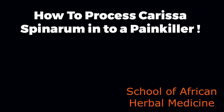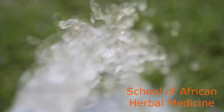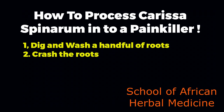How do you process it into a painkiller? Here is a step-by-step guide on how to process Carissa Spinarum to make it a painkiller. Step one: dig out and wash a handful of roots. Clean the roots — you don't boil them with soil, you clean them first. Step two: crush the roots using whatever equipment you have at home, such as a mortar.